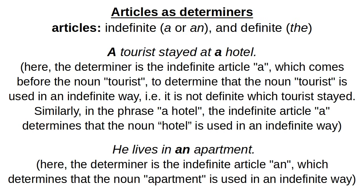Let us take the first type: articles used as determiners. For example, 'a tourist stayed at a hotel.' Here the determiner is the indefinite article 'a.' It's indefinite because we do not know which tourist — we are not specific or definite about it. Similarly, 'stayed at a hotel' uses 'a' because we are not sure which hotel.